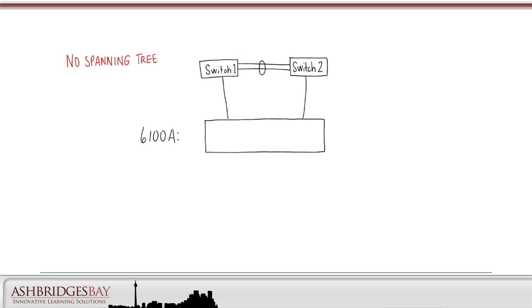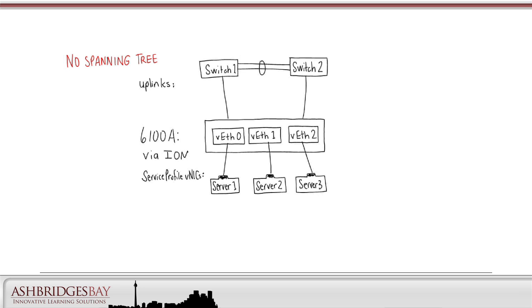We'll focus on the A side and connect 6100A to two upstream switches. We'll draw three servers and configure a single service profile vNIC on each of them. The server vNICs are pinned via the IOMs to vEthernet interfaces on the 6100. The vEthernet interfaces are pinned to uplinks.